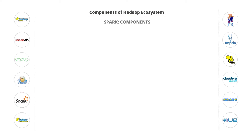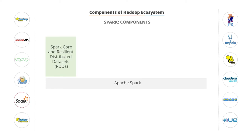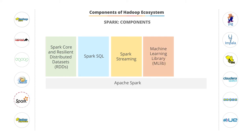Spark has the following major components. As shown in the diagram, we see Spark Core, also the Resilient Distributed Datasets, also known as RDDs, Spark SQL, Spark Streaming, the machine learning library or MLlib, and GraphX. Spark is now widely used, and you'll be learning more about it in subsequent lessons.